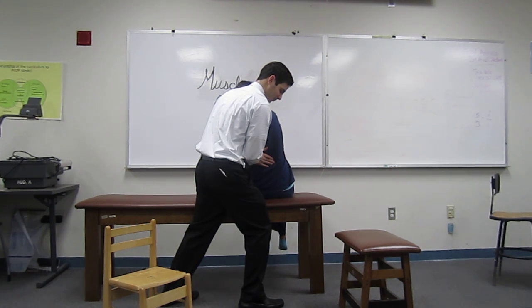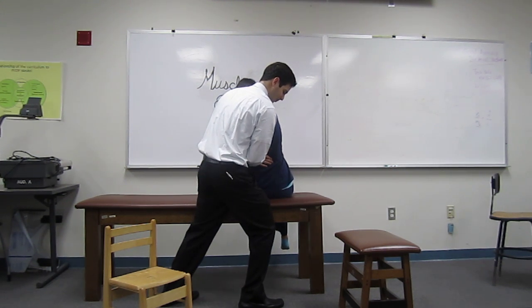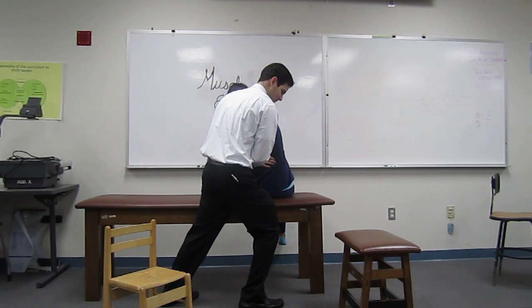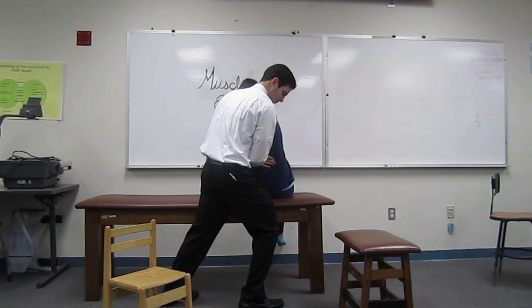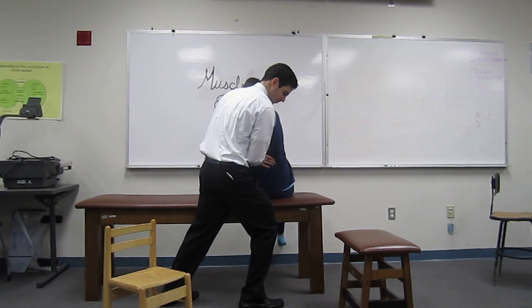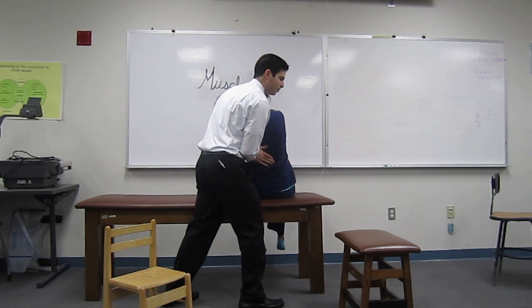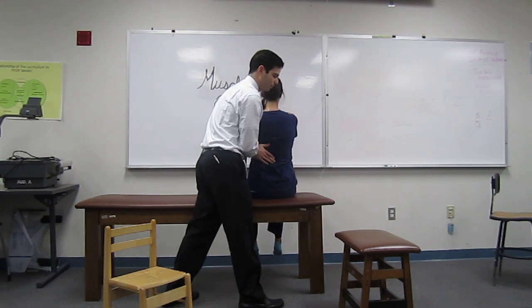At the end of the isometric contraction, the physician will re-engage the barrier by further side bending, rotating, and extending to lock out the segment, and then the patient will re-engage. After three to five repetitions of three to five second contractions, the patient can be passively returned and then re-evaluated.